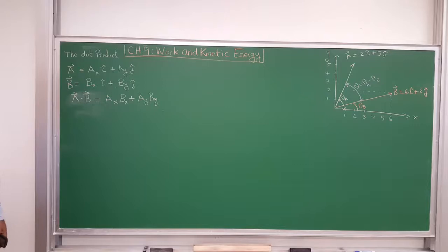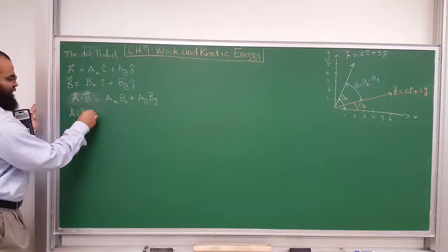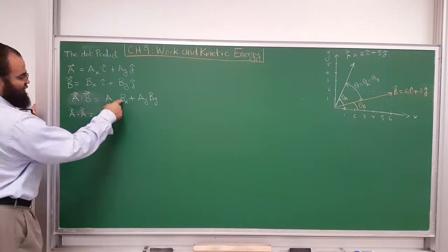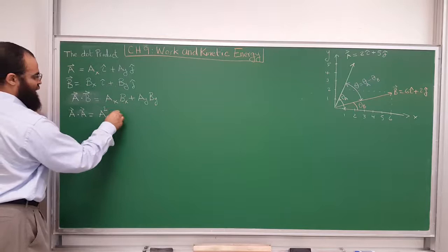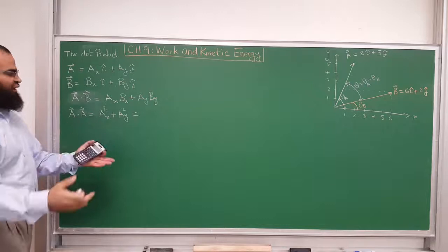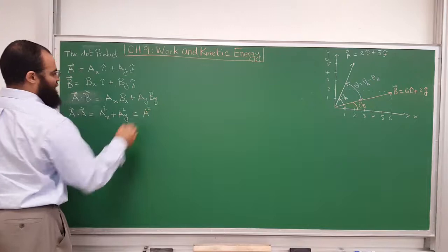For example, if I want A dot A itself, it will give me Ax times Ax — that's Ax squared — plus Ay times Ay, which is Ay squared. And if you remember, to find the magnitude of vector A, you do the square root of Ax squared plus Ay squared, so A dot A is just the magnitude of vector A squared.